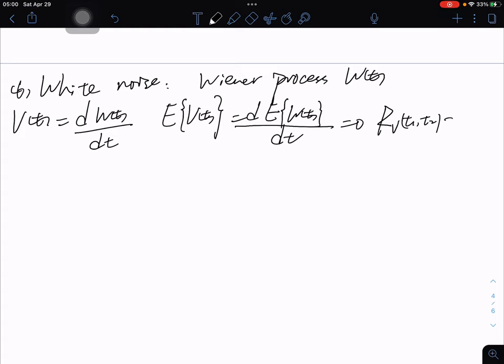And R_V(t1, t2) equals Q(t1)δ(t1-t2). W(t) has the derivative, we use V(t) = dW(t)/dt.